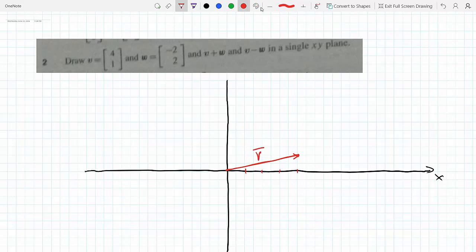Then I do the same thing for W. For W, I go negative 2, so 2 to the left along the x-axis. Let's label this the y-axis. I go negative 2 to the left and 2 up: 1, 2. The tip of my vector would be here. I join the origin to that point and this would be my W.